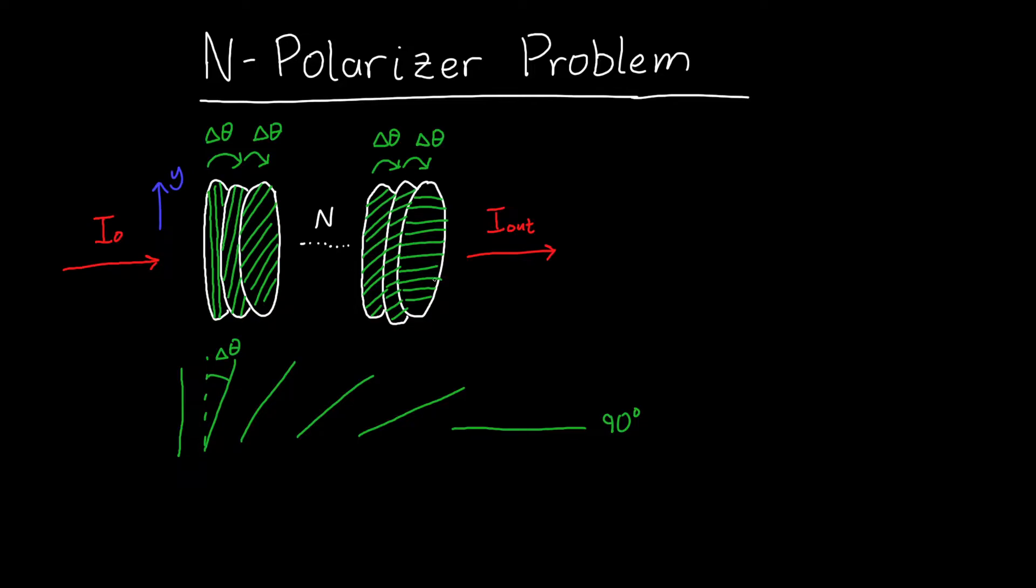How exactly do we do this problem? Well, we can use Malus's law, which says that the output intensity, or the intensity after the first polarizer, I₁, is equal to the input intensity multiplied by cosine squared of the angle between that polarizer and the previous polarization.